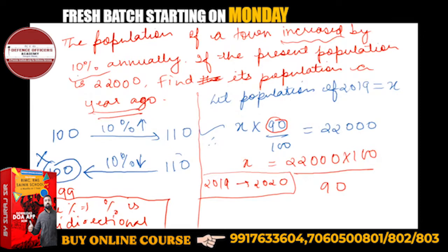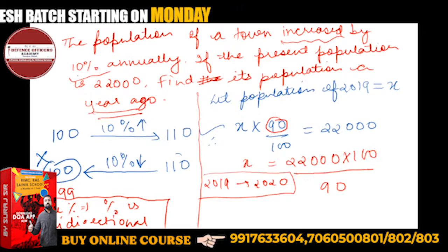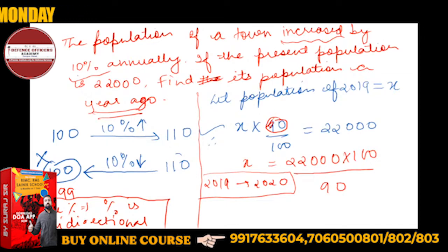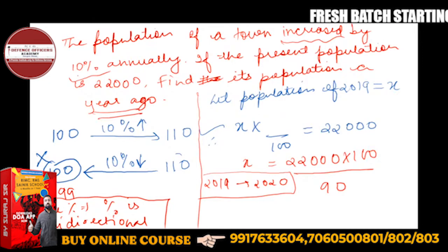Tabhi main kahun ki yeh solve kyun nahi ho raha. Increase kar rahi hai population, it is not decreasing right now. So increase kar rahi hai, 10% ka matlab hai 110. So simple.